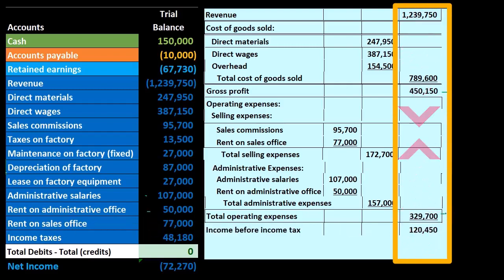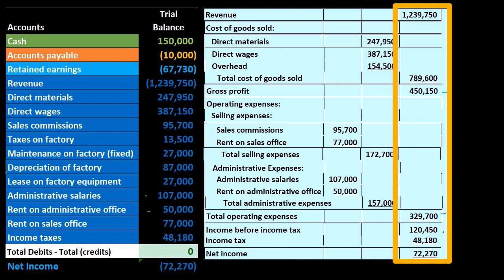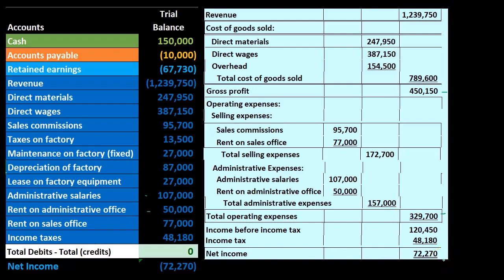That gives us income before income taxes of 120,450, and then we calculate the taxes on it to give us the 72,740 bottom line net income. So that's the standard type of income statement.